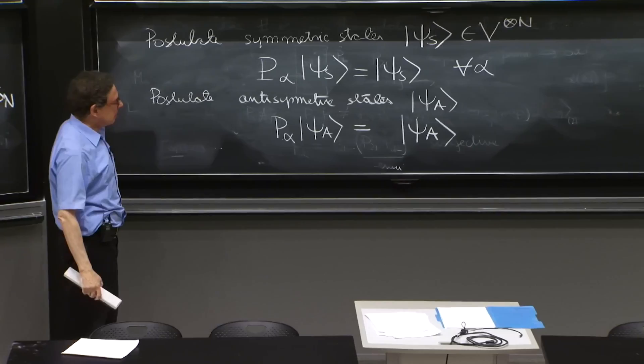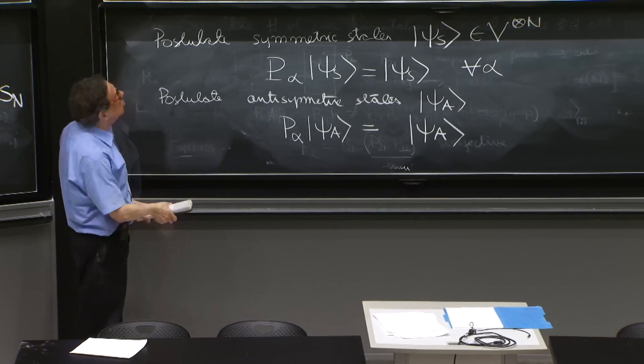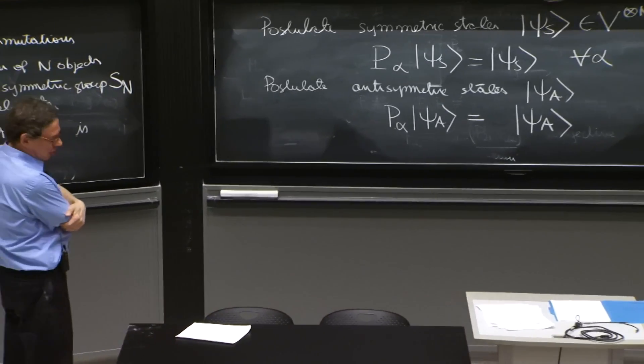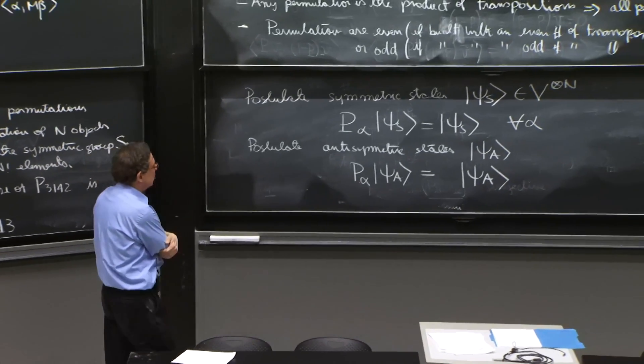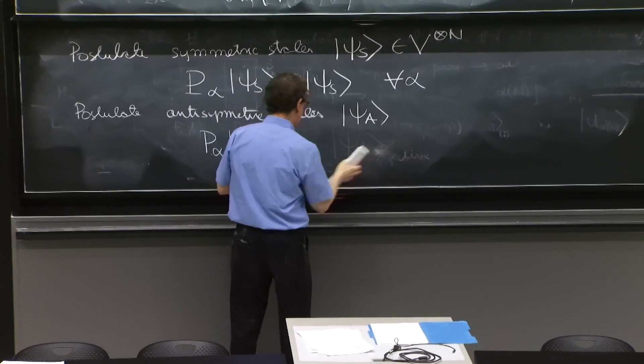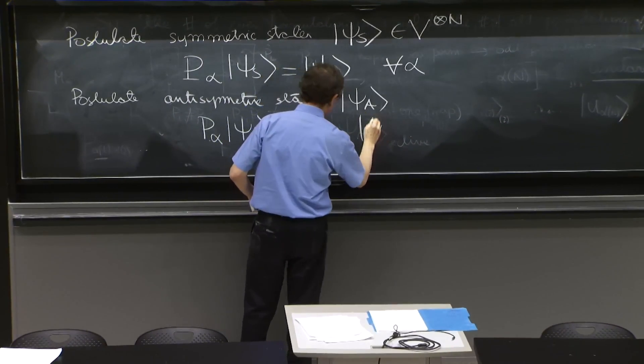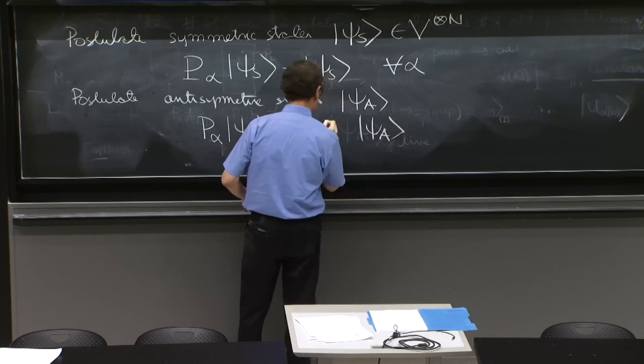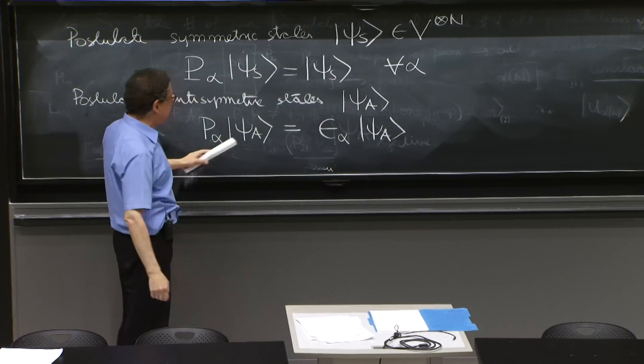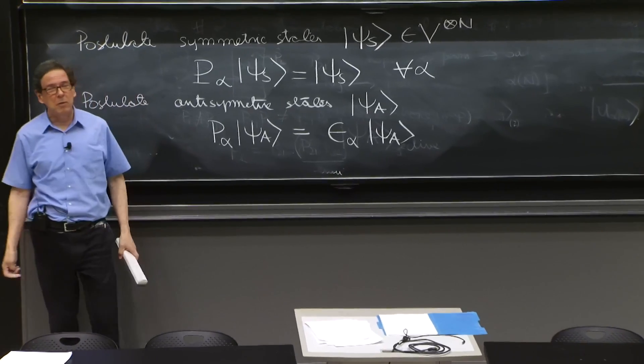So even if we postulate something, we have to postulate something that makes some sense. And so far, it doesn't make sense. So what can we use? We can use the fact that there's some even permutations and some odd permutations. So we'll put the sign factor here, epsilon_alpha psi_a. This is the only way to solve this problem, is to put the sign factor epsilon_alpha associated to the permutations.